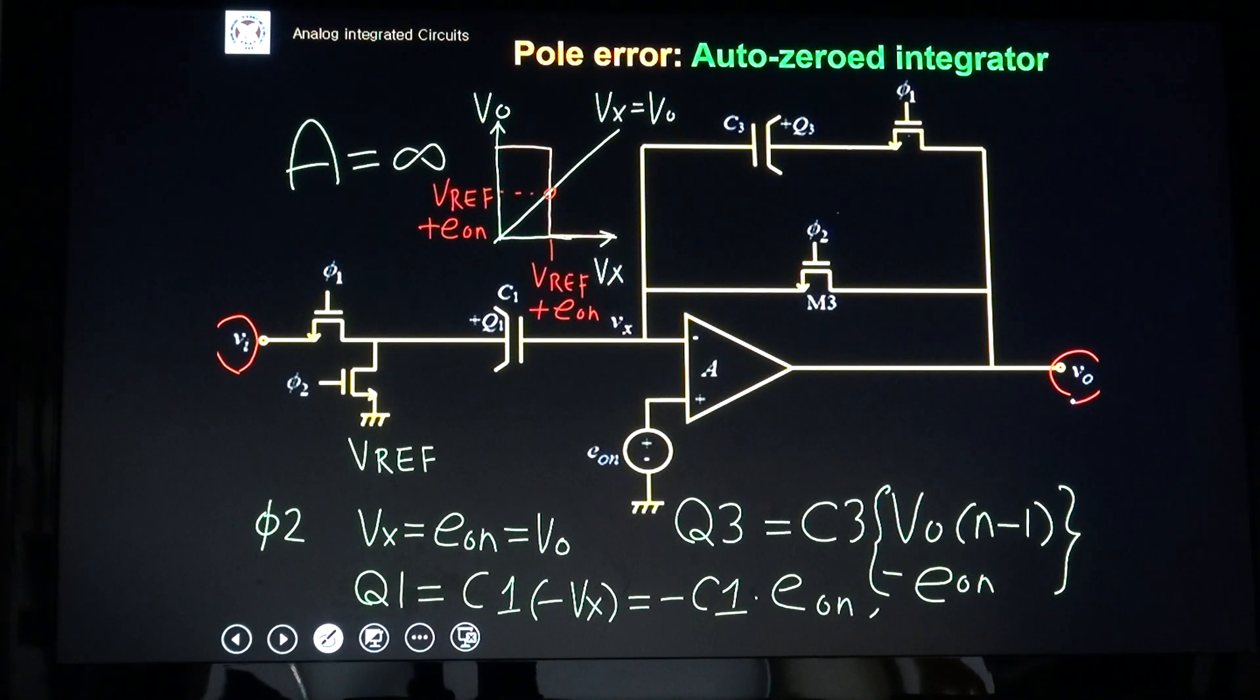For offset compensation, let's consider A equal infinity - voltage gain A equal infinity. There is Vx, the op-amp summing node minus input node voltage, and VO is output node voltage. If I plot VO versus Vx, this yellow one shows the amp characteristic. Because of EON,